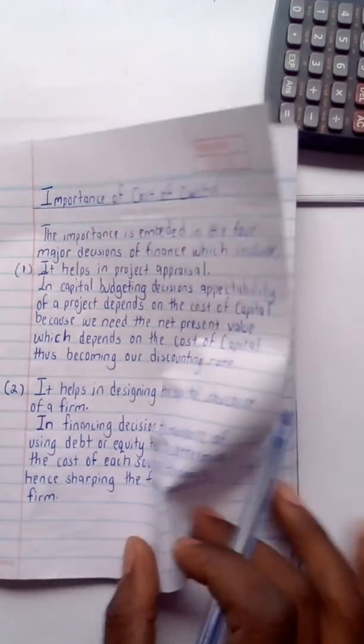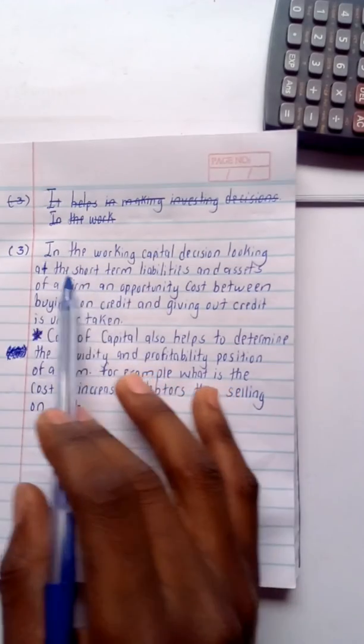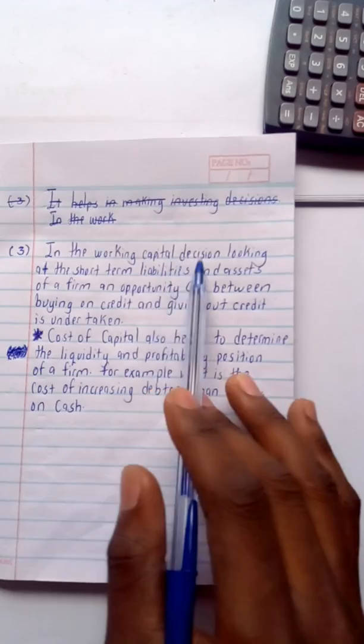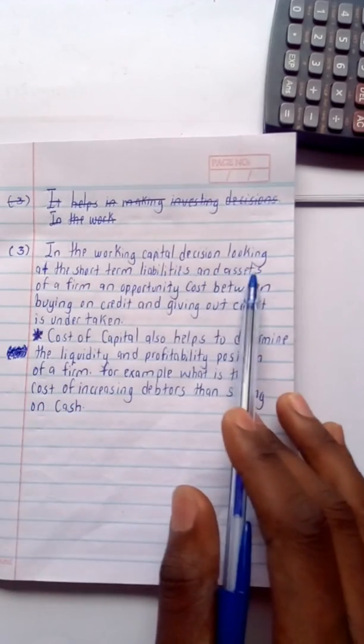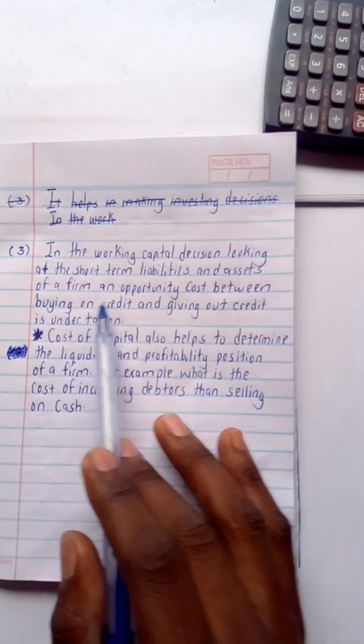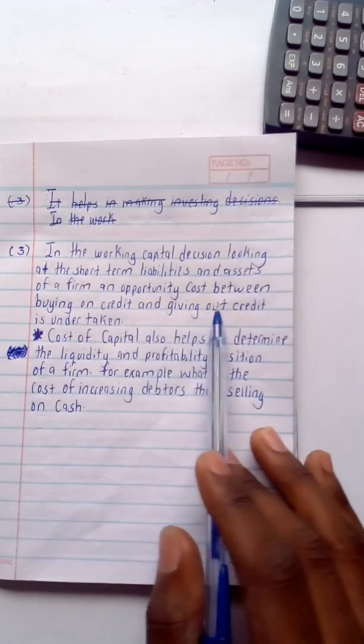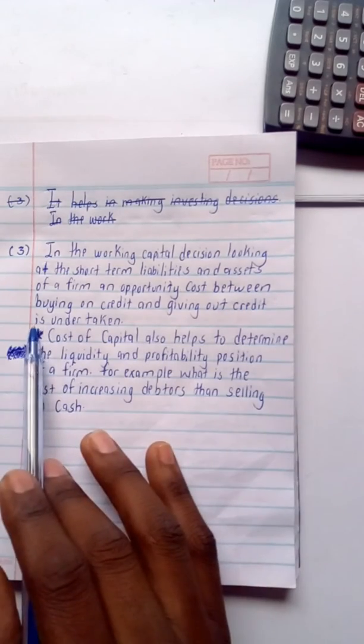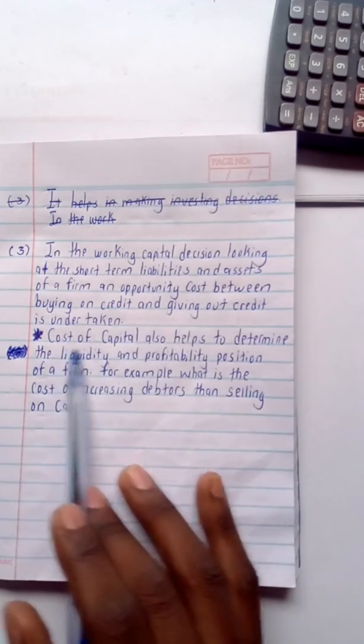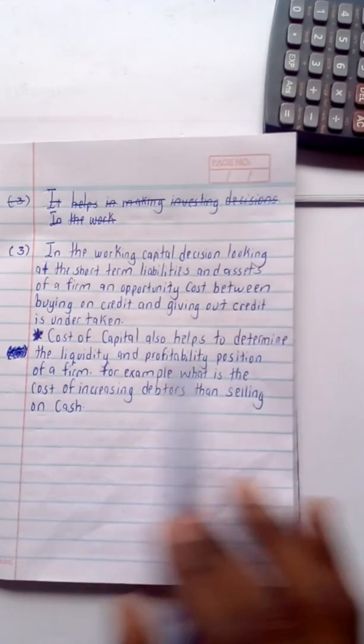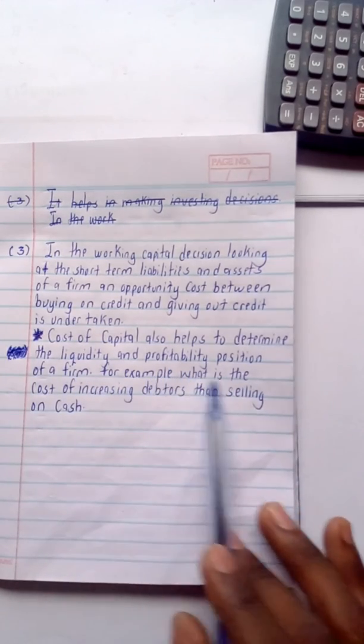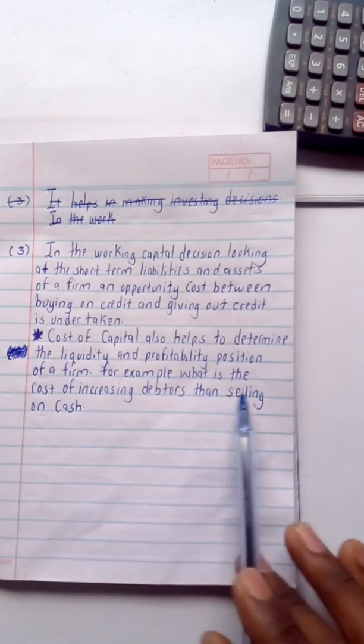Moving on to another importance to do with the working capital, in the working capital decision, looking at the short-term liabilities and assets of a firm, an opportunity cost between buying on credit and giving out credit is undertaken. Another point under working capital decision, cost of capital also helps to determine the liquidity and profitability position of a firm. For example, what is the cost of increasing debtors than selling on cash?